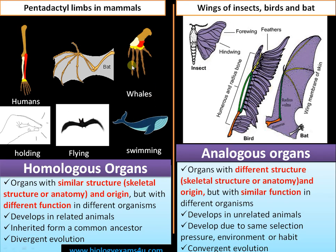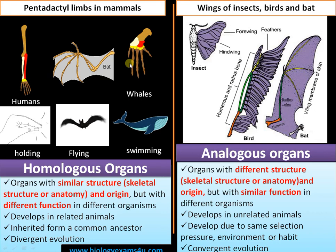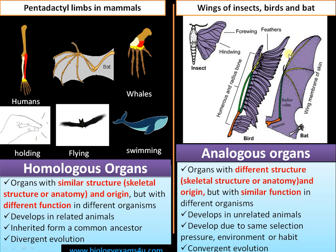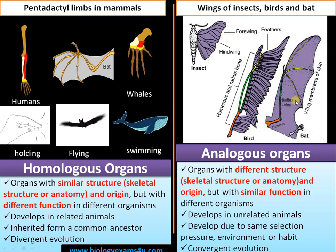In short, homologous organs are organs that have the same structure and origin but different function in different organisms, whereas analogous structures are organs with different structure and origin but carrying out the same function in different organisms.